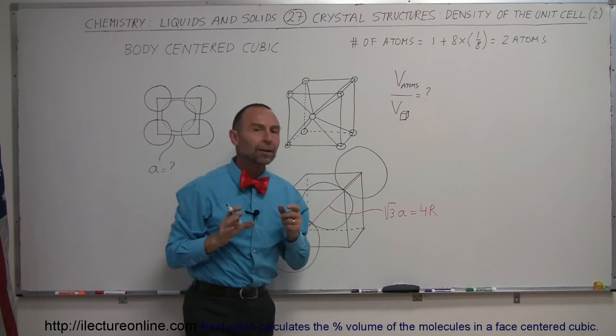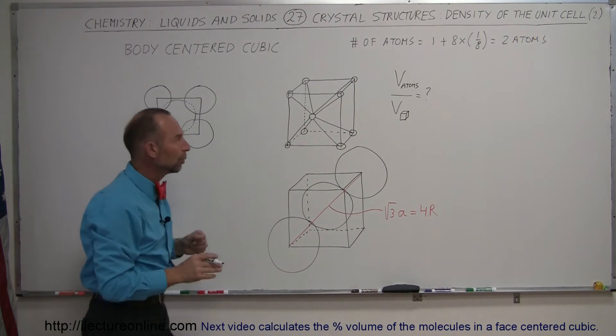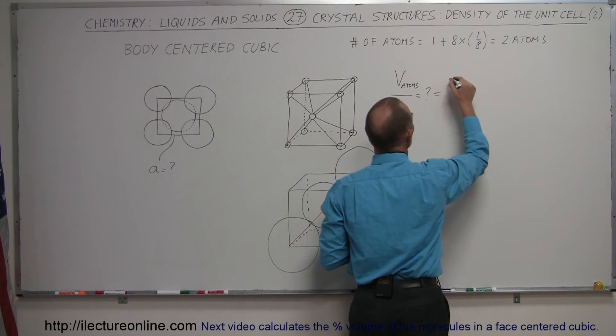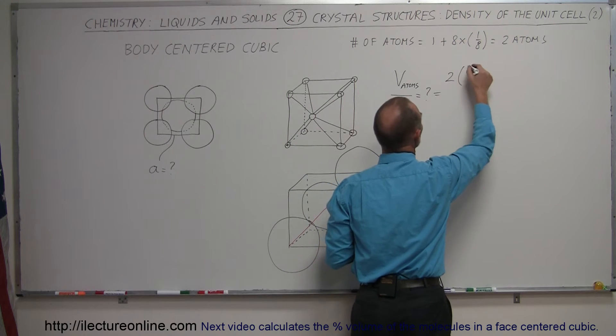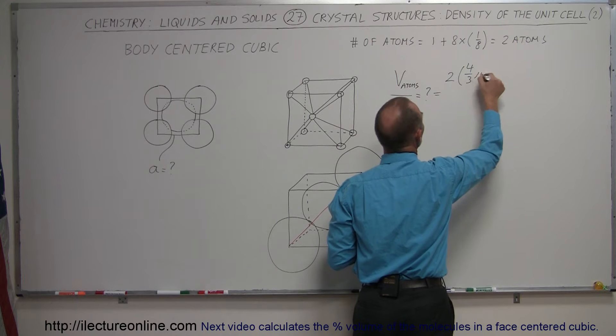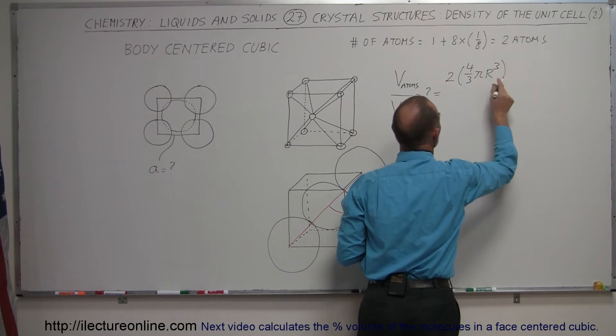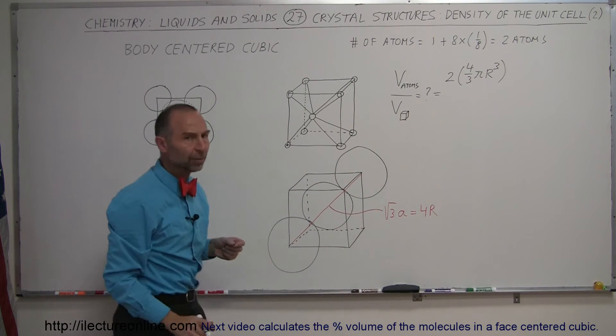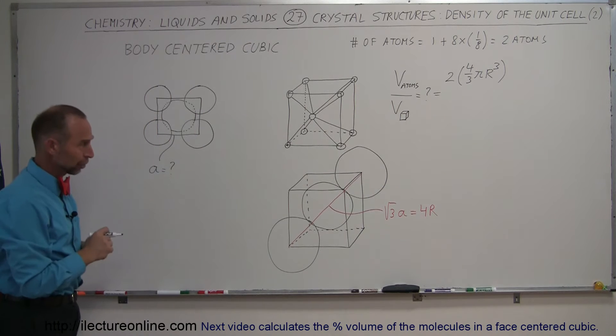Therefore, the volume occupied by the atoms inside the cube will be equal to two times the volume of a single sphere, which is four-thirds pi r cubed. So that will be the volume of all the atoms inside the cube.